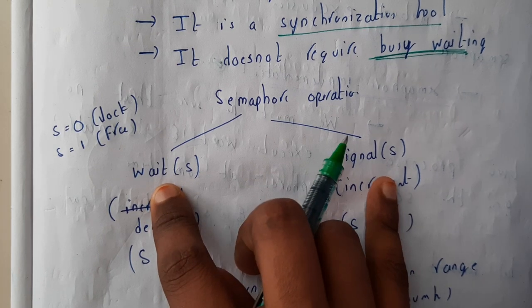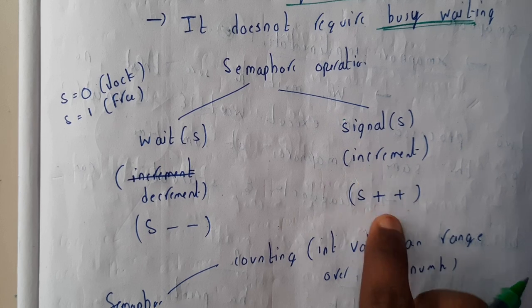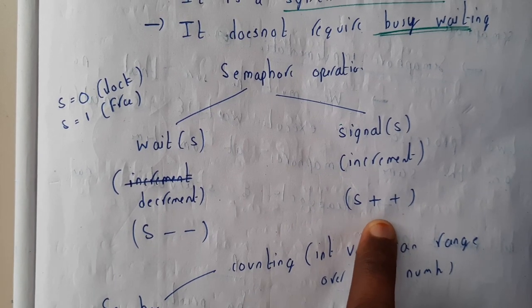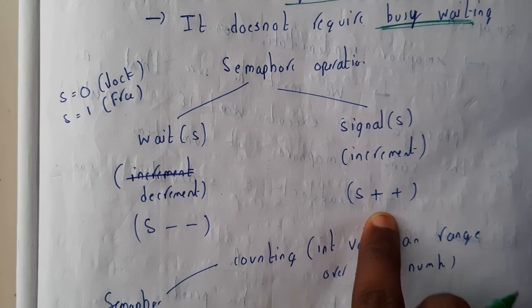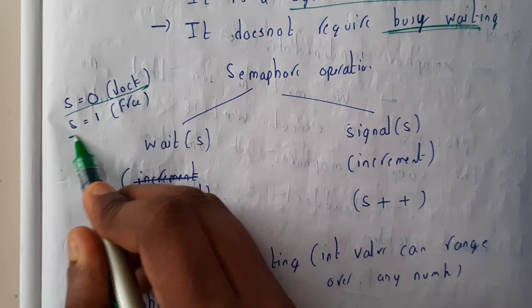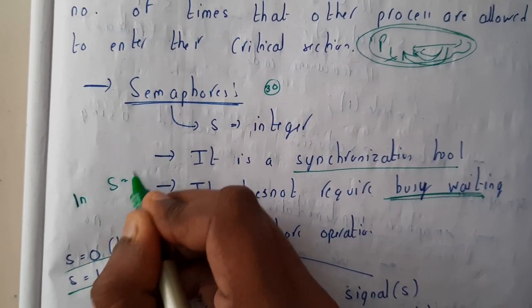Those are wait and signal. Wait is decrement, it does s minus minus, whereas signal is increment, s plus plus. If s is zero, it is lock, and if s is one, it is free. So initialization will be done to s equal to one.